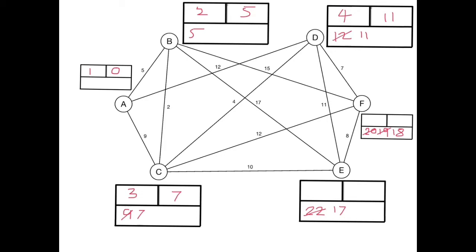Then E is now the next lowest one so this is the fifth one to get labeled and that has 17 as its permanent label. We can get from E to F in 17 plus 8 is 25.